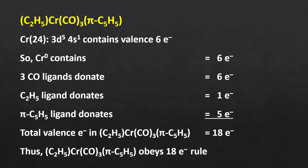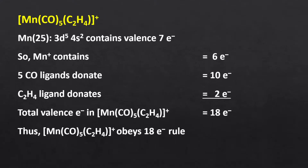In this complex we have 3 different ligands and all of them are neutral. Thus, the oxidation state of chromium is 0. Ethyl ligand is a 1 electron donor. So 6 electrons from chromium, 1 from ethyl, 5 from cyclopentadienyl, and 6 from 3 carbonyls — overall 18 electrons. In another complex, the oxidation state of manganese is +1. So 6 electrons from manganese, 2 from ethane, and 10 from 5 carbonyls — overall 18 electrons. It is a stable complex.